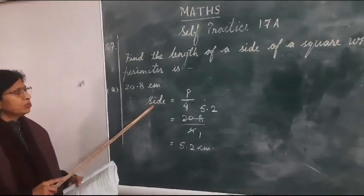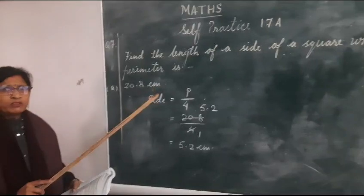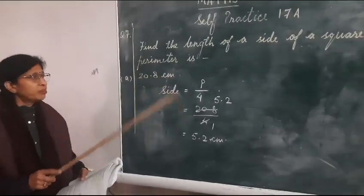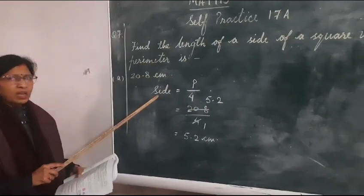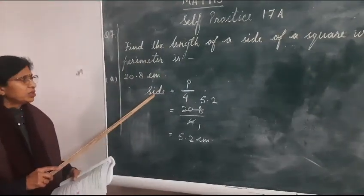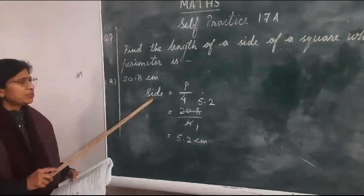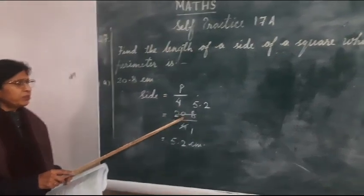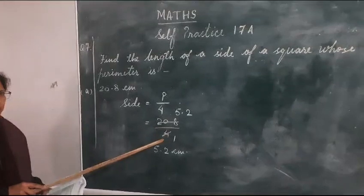So as we know, the formula of perimeter of a square is 4 into side. But here we are finding out the side of the square, so that formula will be side of the square is equal to perimeter upon 4. Whatever perimeter is given, that will be divided by 4.